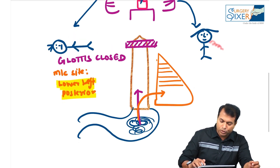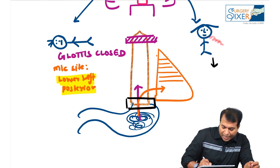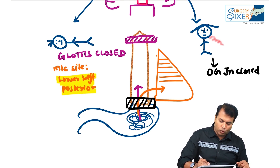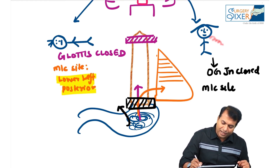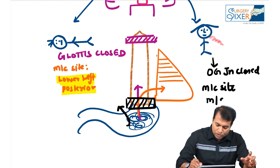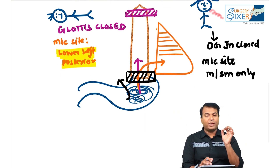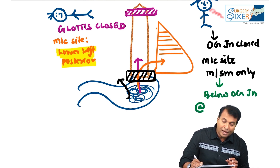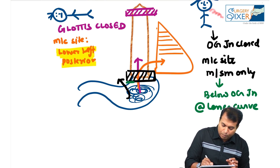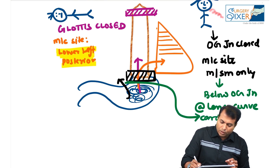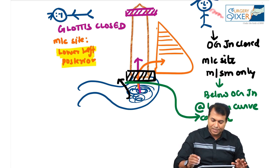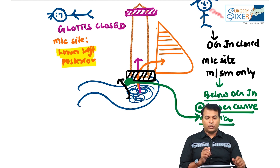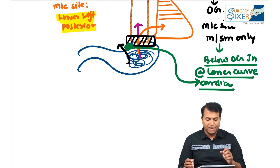On the other hand, in Mallory-Weiss — what happened to Somo? In Somo, the OG junction (LES) was closed while he was vomiting. So it created a tear — not a full thickness tear, but a partial tear involving mucosa and submucosa only. The most common site is below the OG junction at the lesser curve, at the cardia.